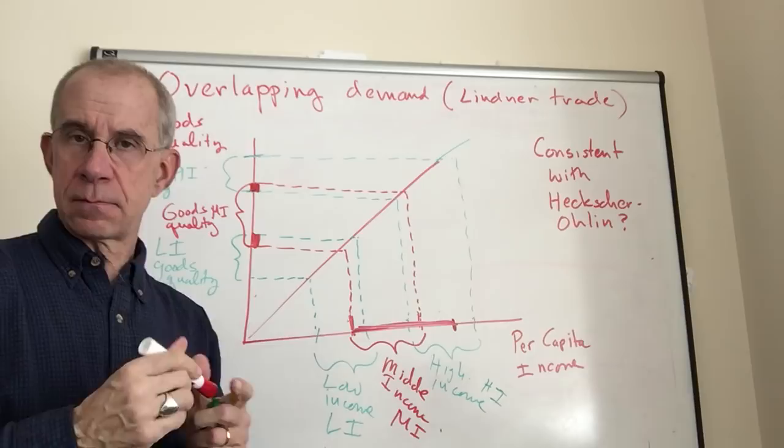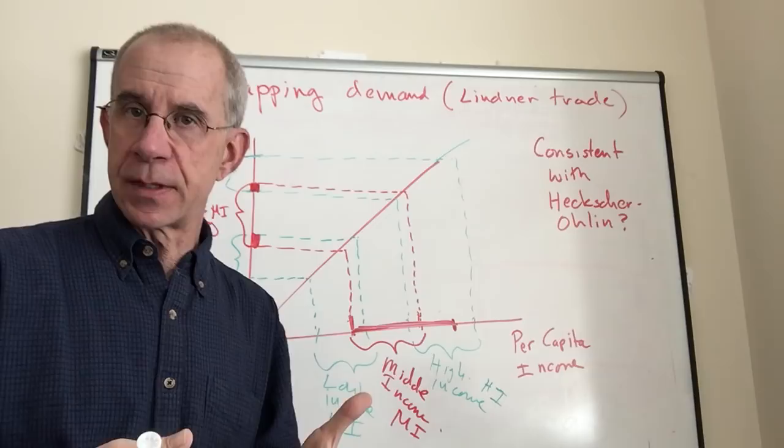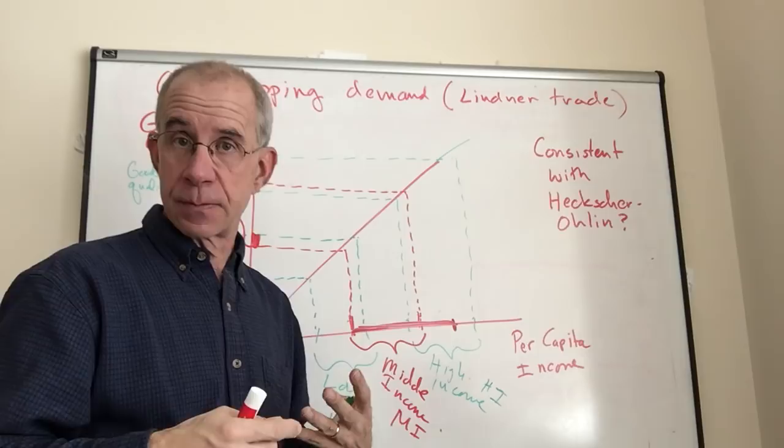This basic intuition suggests that the more countries are like each other in terms of per capita income, the more likely they are to trade with each other. Poor countries have an incentive to trade with each other, high income countries have an incentive to trade with each other, and then there's some intermediate countries possibly. But it's countries that are similar to each other that will trade more than countries that are dissimilar.